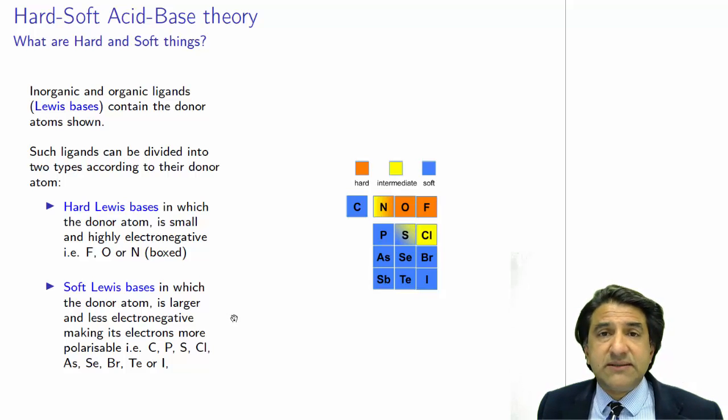Hi, welcome to Chemistry 3006, the hydrosphere. We're talking about metal ions and their salts, and whether they are soluble or insoluble. We were talking about hard-soft acid-base theory. So let's look at some examples of what hard and soft things are.